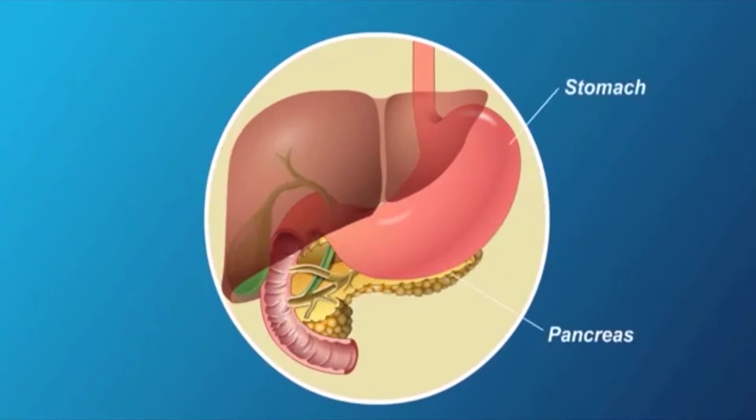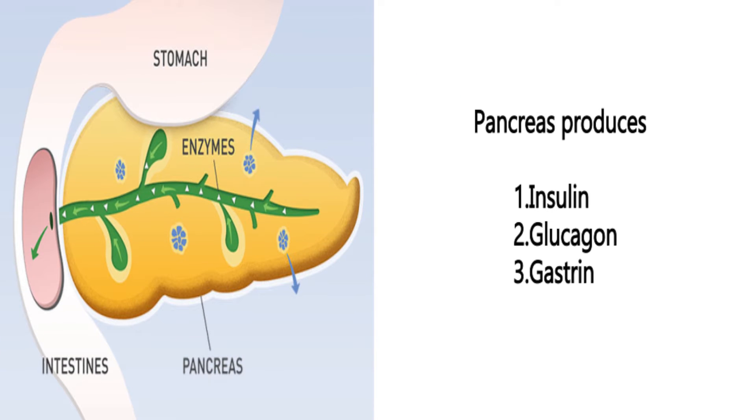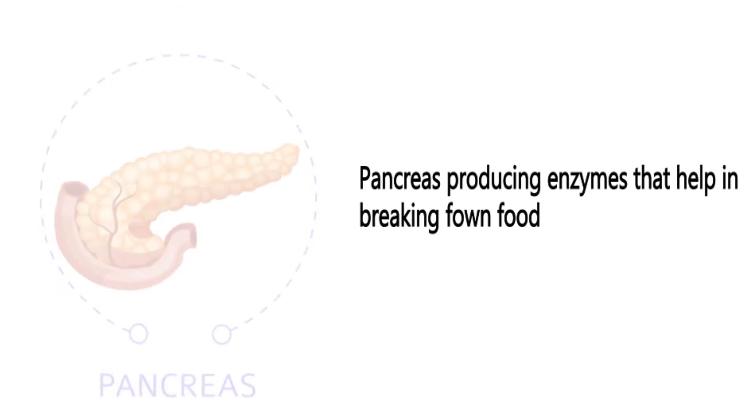It extends horizontally across the abdomen. It is part of the digestive system and produces insulin, glucagon, gastrin and other important enzymes and hormones that help in breaking down food.